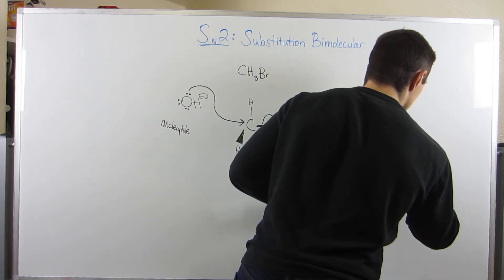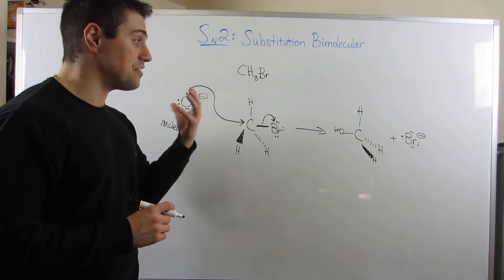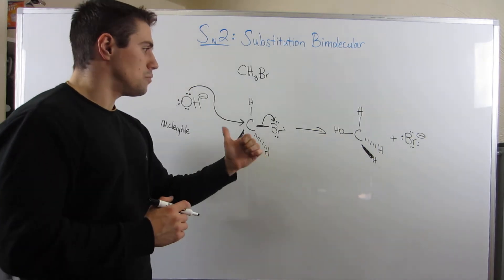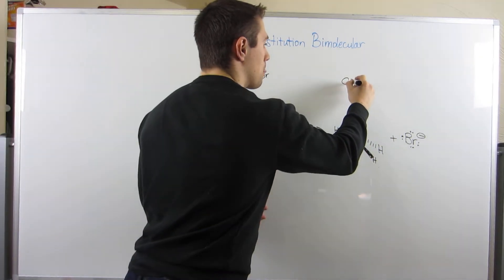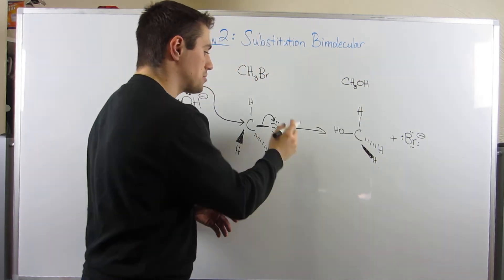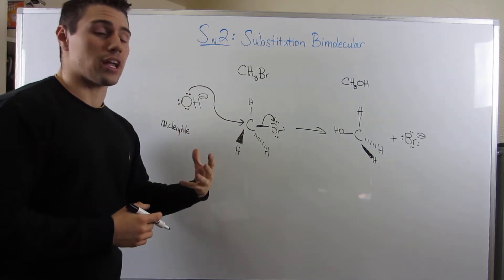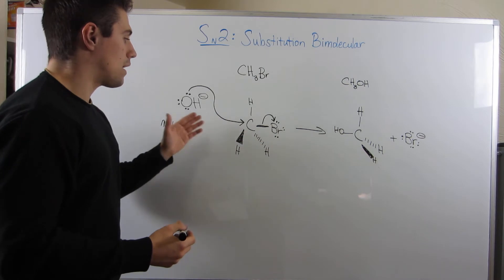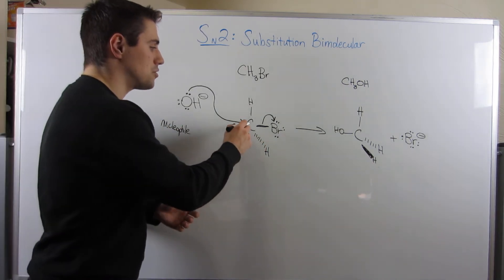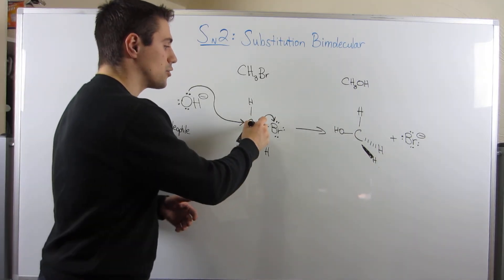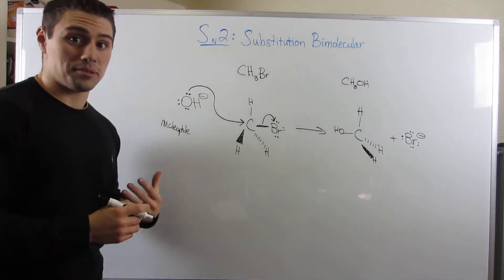We kicked off Br — now he's Br minus, bromide ion. At the same time, the OH is behind the carbon, facing the opposite way of the bromine. SN2 is sometimes called backside attack because the nucleophile comes in from behind where the leaving group is. In this case, bromine is our leaving group. The leaving group is on one side and the nucleophile comes in from the opposite side — that's why we call it backside attack.